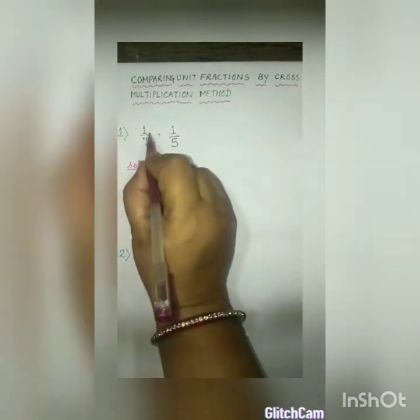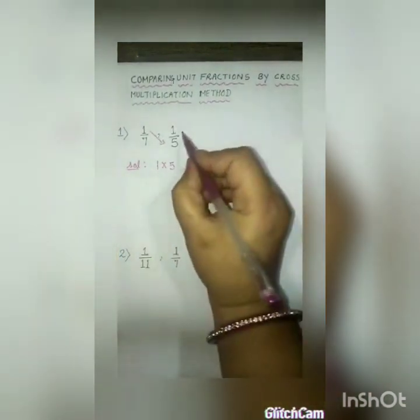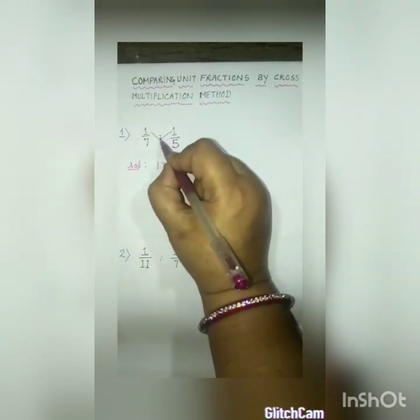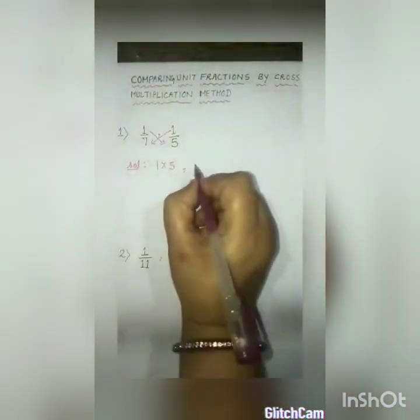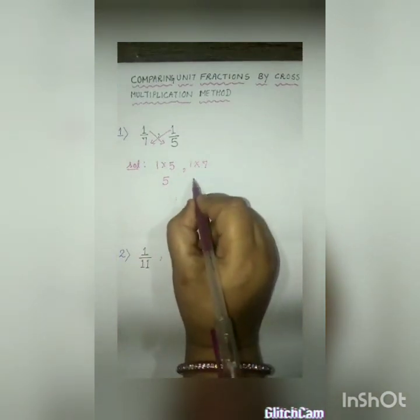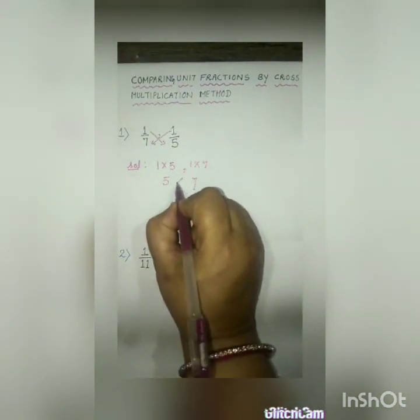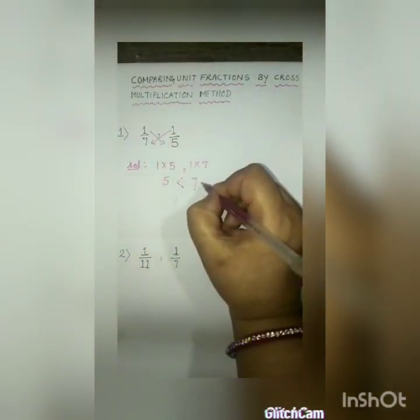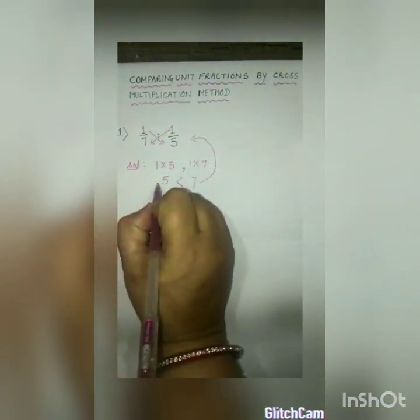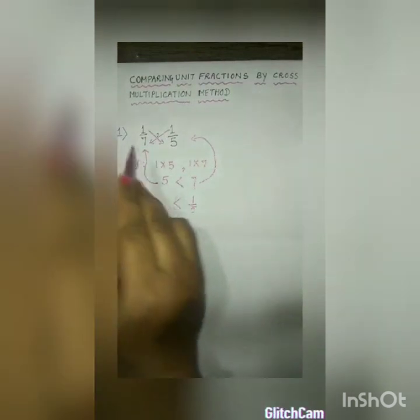First, I have taken the example of one by seven and one by five. I will compare these fractions by the cross multiplication method. I will multiply the numerator of the first fraction by the denominator of the second fraction, and then multiply the numerator of the second fraction by the denominator of the first fraction. One into 5 is 5, and one into 7 is 7. You can see 7 is bigger than 5. As 7 belongs to one by seven and 5 belongs to one by five, so one by five is greater than one by seven.